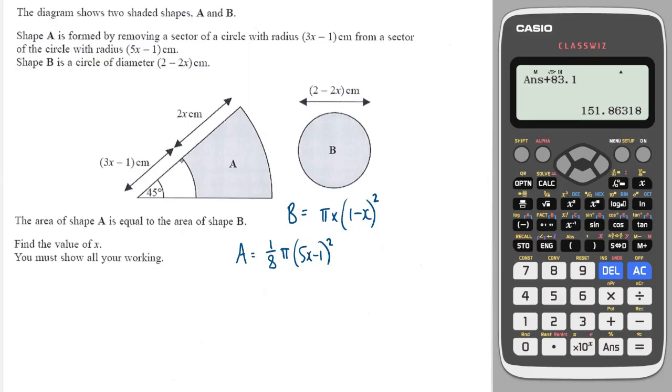And we need to subtract the unshaded sector, which is also the same angle, so that is an eighth, times by π times by the radius of that sector squared. Okay, so now we equate A and B together.